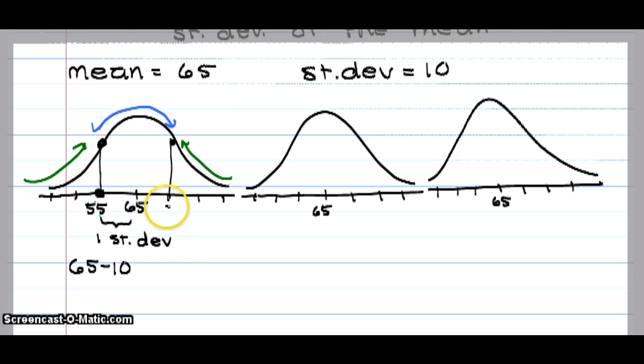And one standard deviation above the mean, 65 plus 10, this would be 75.